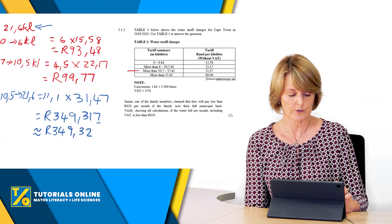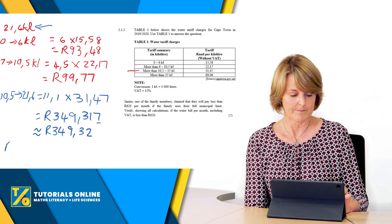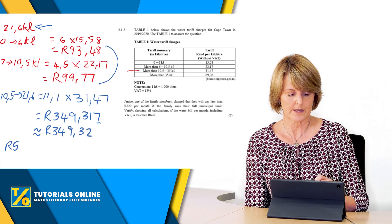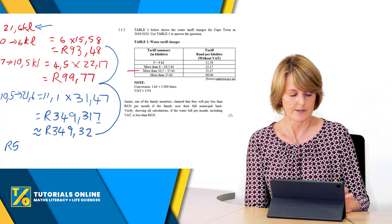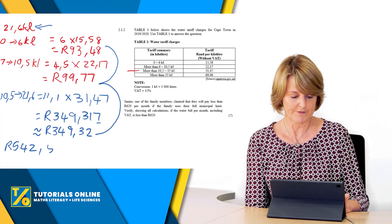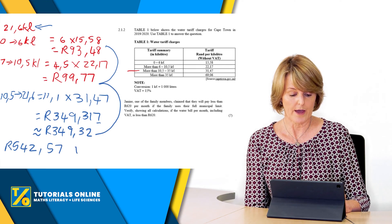Then you're going to add all of that together. You're going to add all those numbers together and we're going to get a total there of, I'm just going to write it here because you're going to add that one plus that one plus that one, and you're going to get 542 rand 57 without VAT.